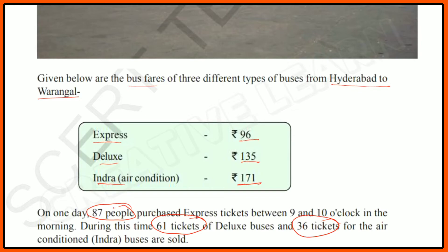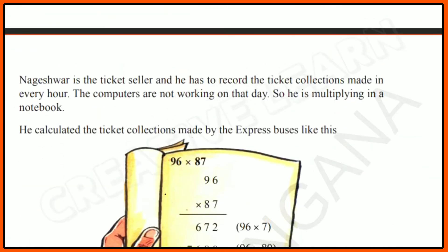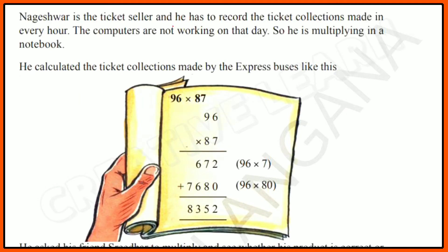For one express ticket the cost is 96 rupees, and 87 people purchased tickets. Nageshwar is the ticket seller, and he has to record the ticket collections made every hour. He calculated the ticket collections made by the express buses.